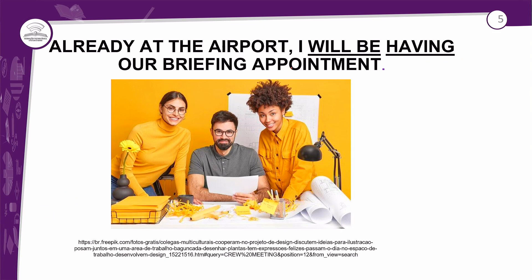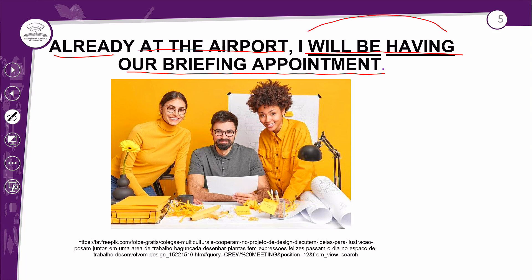Logo em seguida ela fala: 'Already at the airport, I will be having our briefing appointment.' Já no aeroporto, ela terá uma reunião. Na estrutura do futuro contínuo, o foco dos tempos contínuos sempre é na continuidade, na duração dessa ação. Então temos outro verbo: o verbo 'to have', que vai receber o ING. Ele faz parte da regra dos verbos que terminam com E.